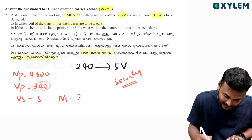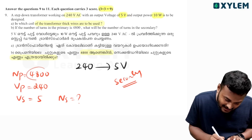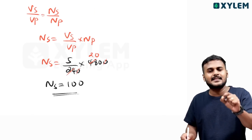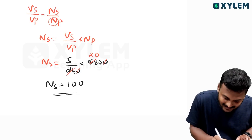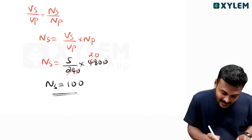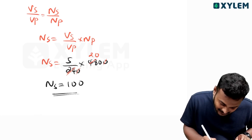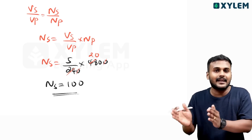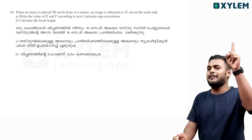Given data: primary voltage is 260 V, secondary voltage is 5 V. Vs by Vp equals ns divided by np. So Vs equals 5, divided by 260, into 480. In the secondary coil, we will have the calculated number of turns.